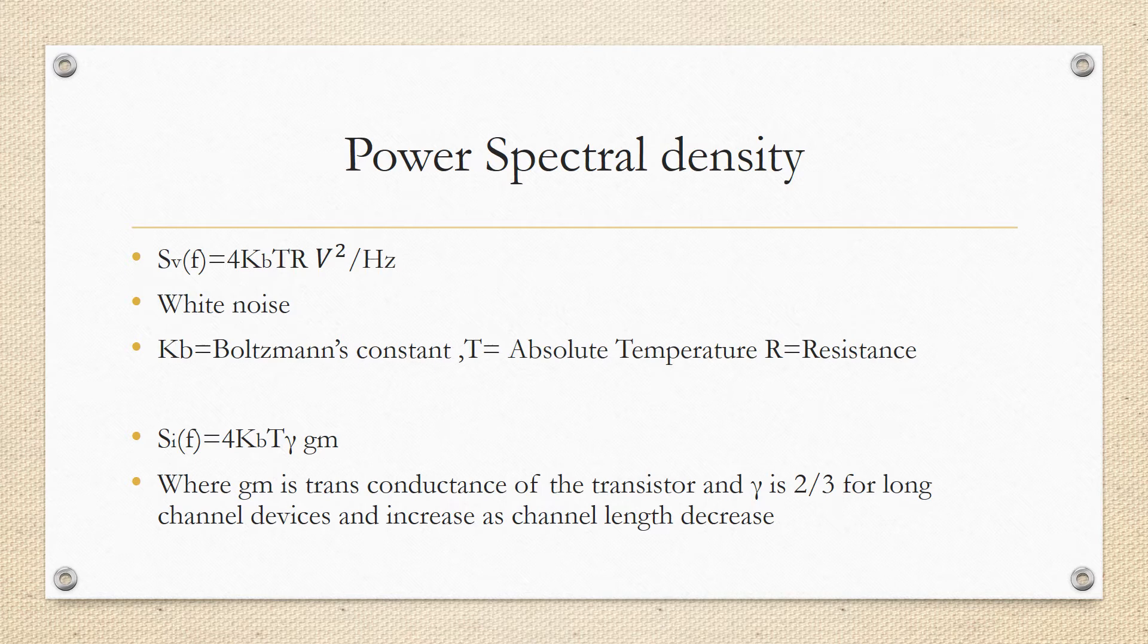The power spectral density of thermal noise is therefore proportional to temperature and independent of frequency. The mean noise power per unit bandwidth is constant at all frequencies. So S(f) is given as 4KbTR, where Kb is Boltzmann's constant, T is absolute temperature, and R is resistance of the conductor.